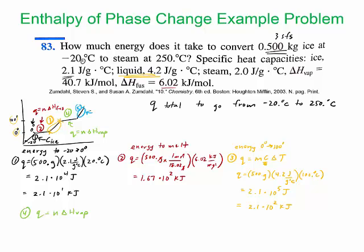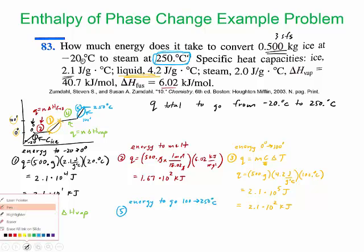For this segment we're going to 250 degrees Celsius, so we're going from 100 and then we end right here at 250. You're going to need the delta T for that. This is the energy to go from 100 to 250 Celsius. Step four was energy to get it to boil.